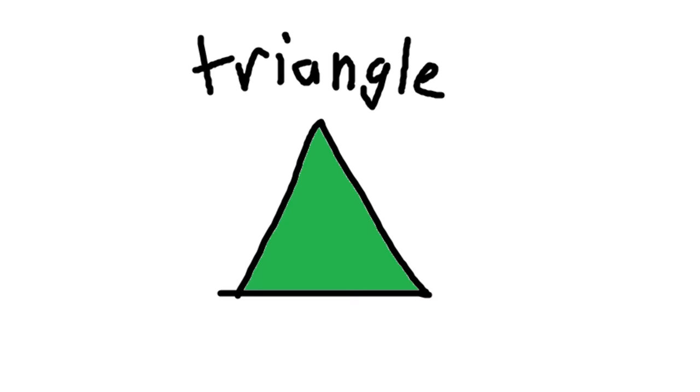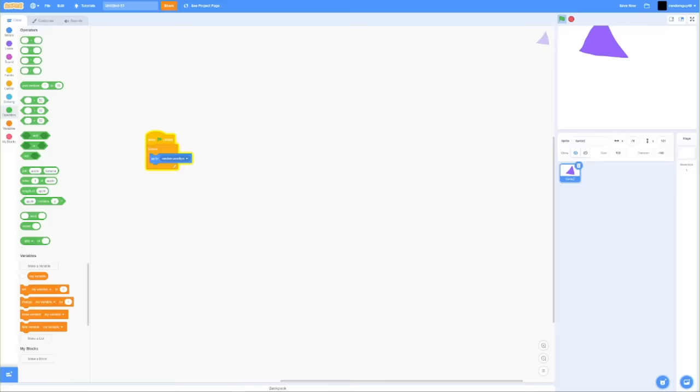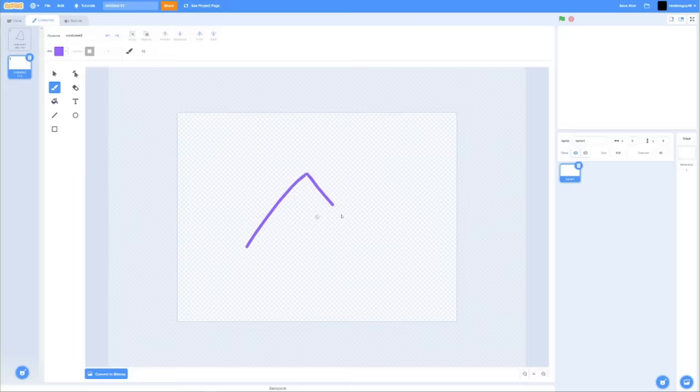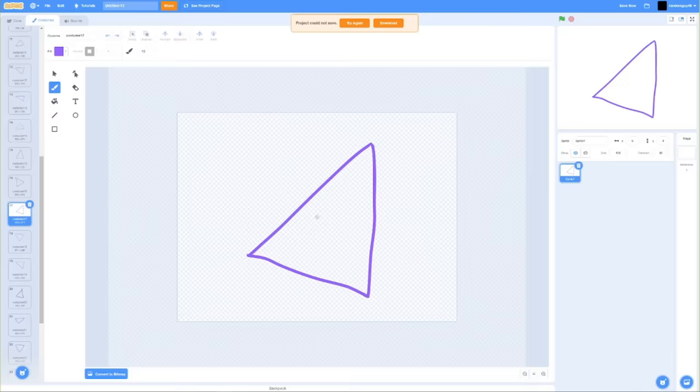To make a triangle using Scratch, your first thought might be to use a sprite and then move and rotate it. But this wouldn't work because I need to make every possible triangle, and that would need way too many costumes. Figuring out which costume to switch to would be a mess.